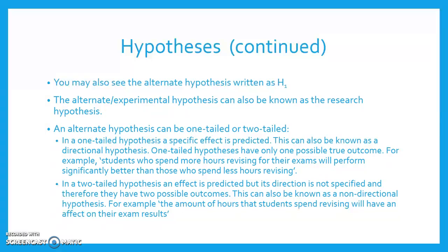An alternate hypothesis can be one-tailed or two-tailed. In a one-tailed hypothesis, a specific effect is predicted. This can also be known as a directional hypothesis. One-tailed hypotheses have only one possible true outcome. For example, students who spend more hours revising for their exams will perform significantly better than those who spend less hours revising.